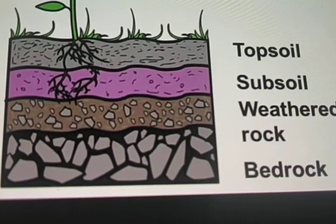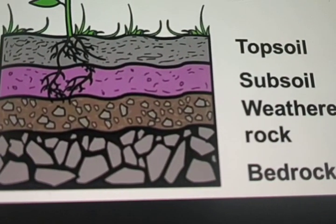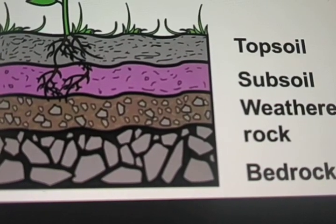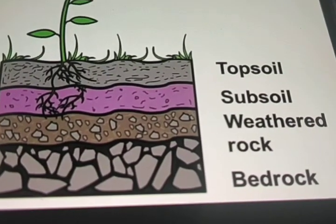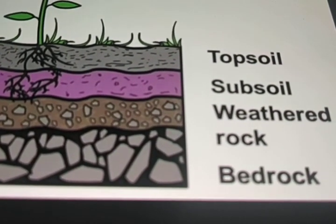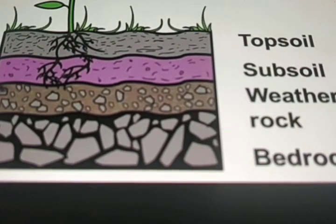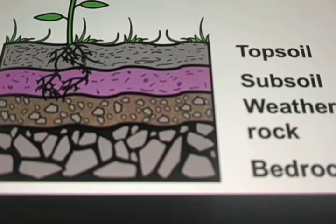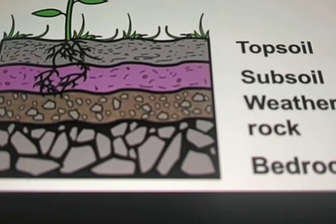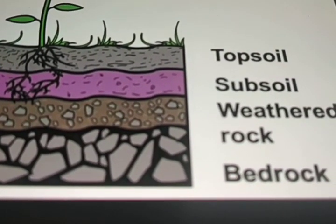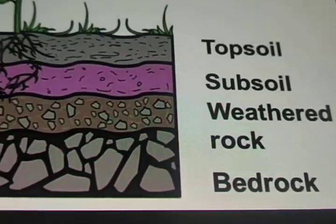The bottom-most layer is bedrock, which is the starting material of the earth from millions of years ago. In short, the soil is a mixture of minerals and broken rocks along with organic and decaying organic matter. It develops in layers one over the other, and these layers are called horizons. From bottom to top: the lowest horizon is bedrock, then comes the horizon of weathered rock, followed by sub-soil and top-soil, and the top-most horizon is rich in humus.